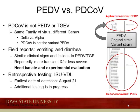Retrospective testing at the ISU VDL on retained fecal samples detected the Delta coronavirus as early as August 21st, from a farm in Minnesota that submitted the sample at that time. However, additional testing is in progress.